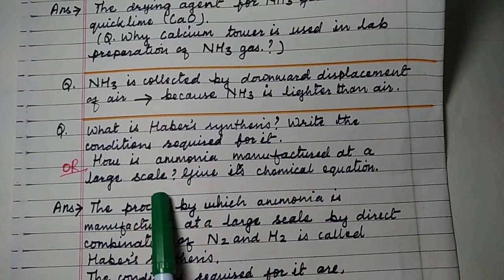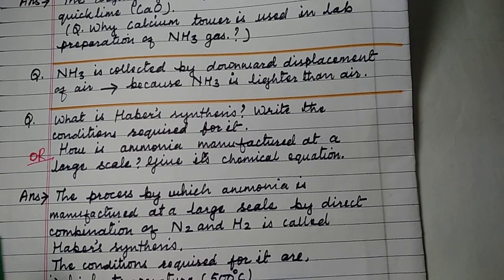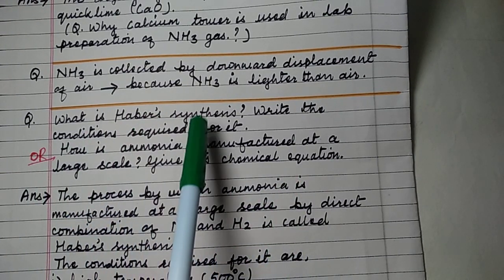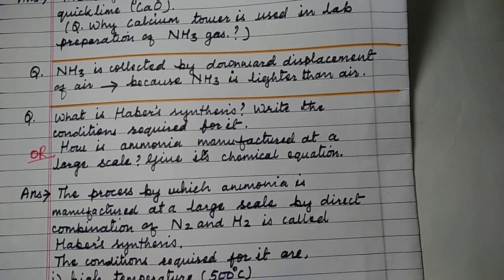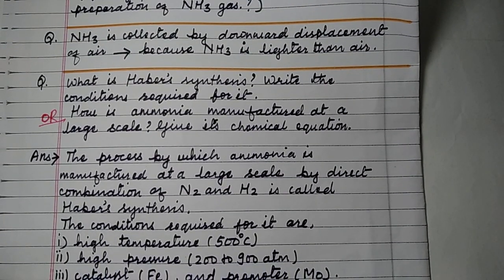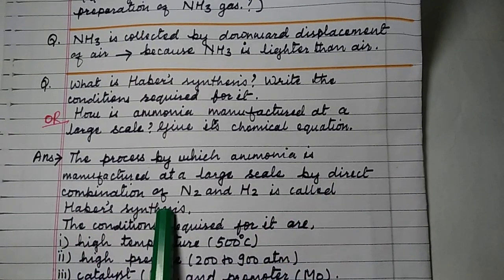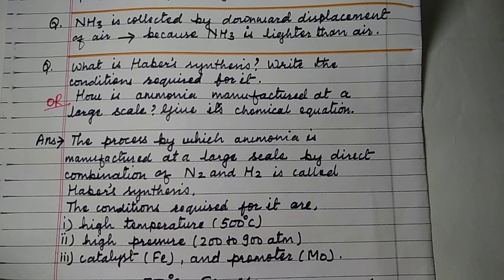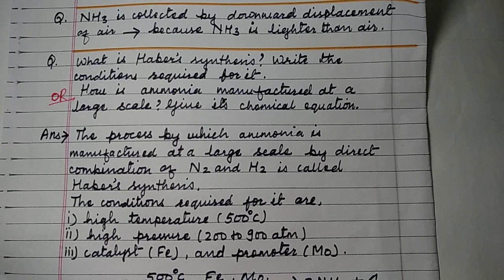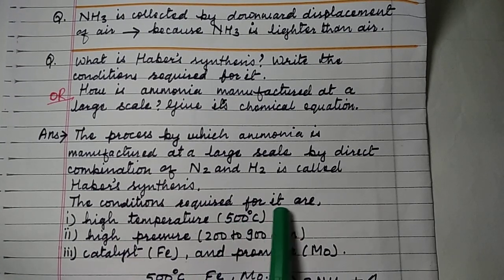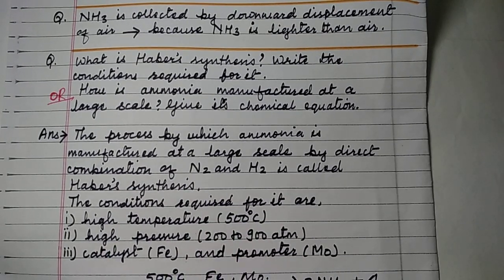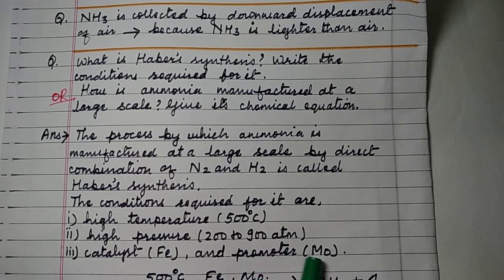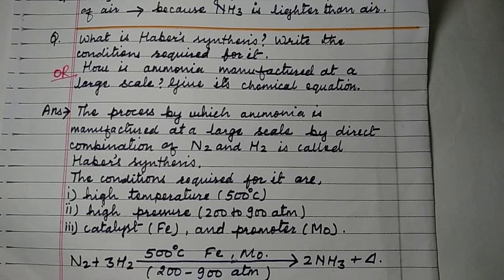Haber's synthesis: the process by which ammonia is manufactured at large scale by direct combination of nitrogen and hydrogen is called Haber's synthesis. The conditions required are: high temperature around 500 degrees Celsius, high pressure of 200 to 900 atmospheric pressure, iron (Fe) as catalyst, and molybdenum (Mo) as promoter.